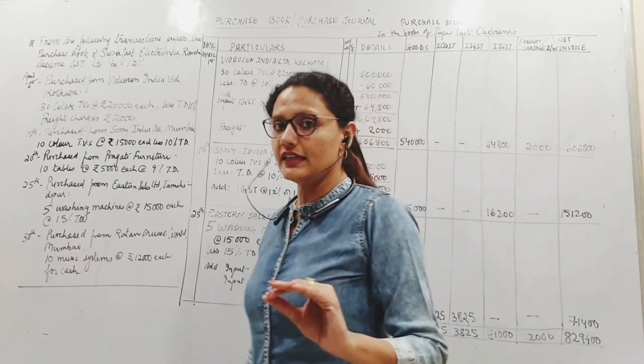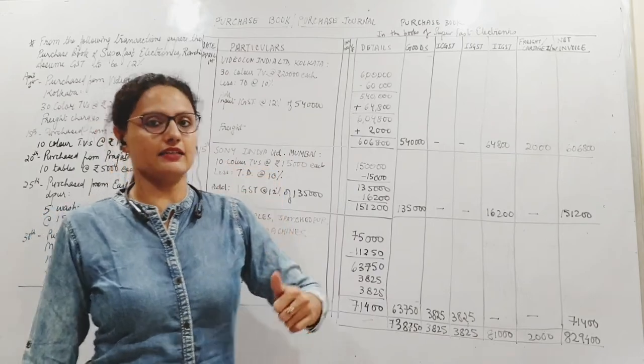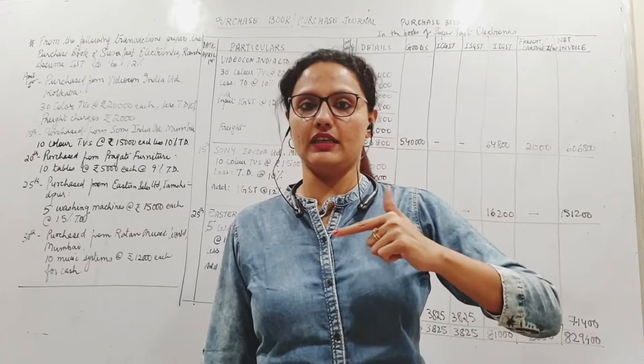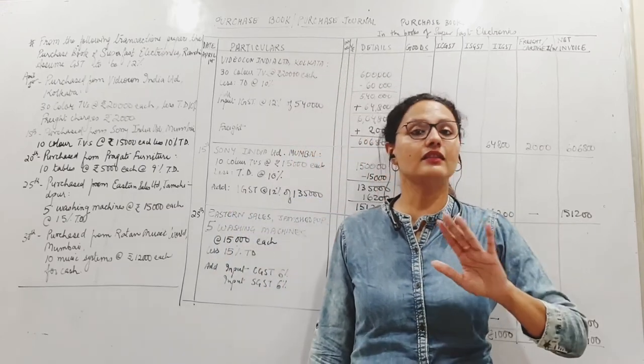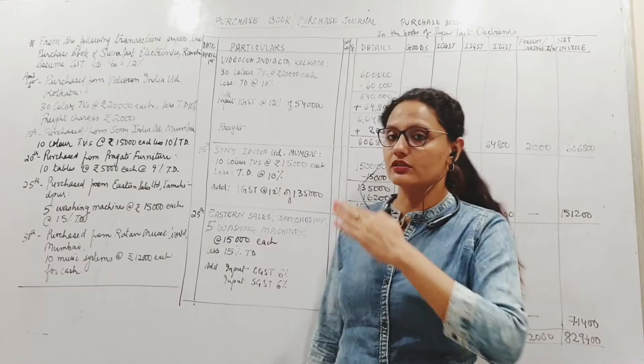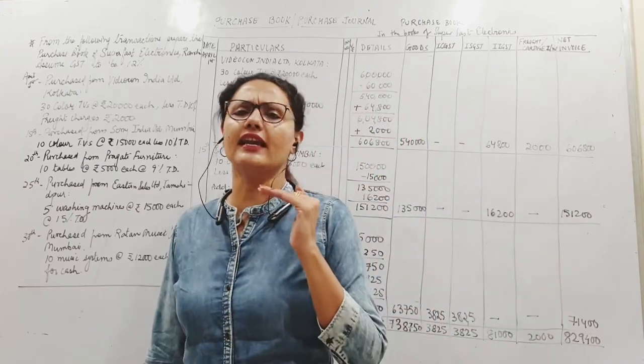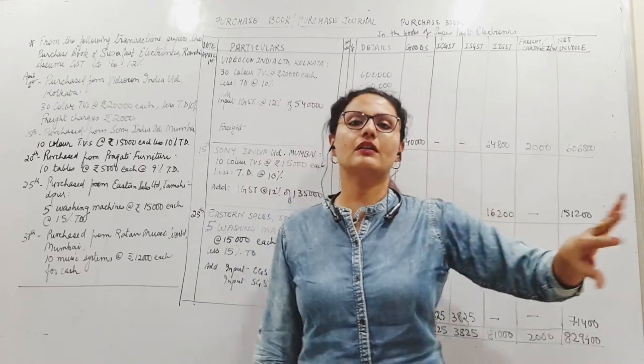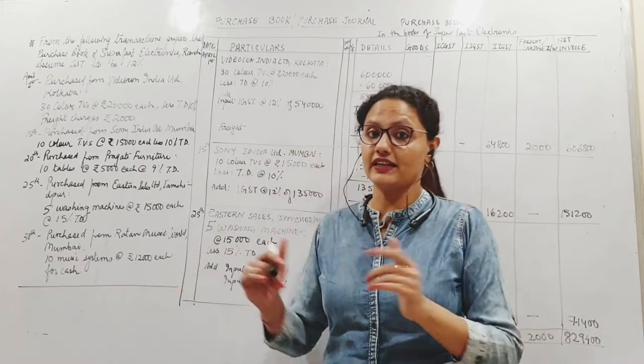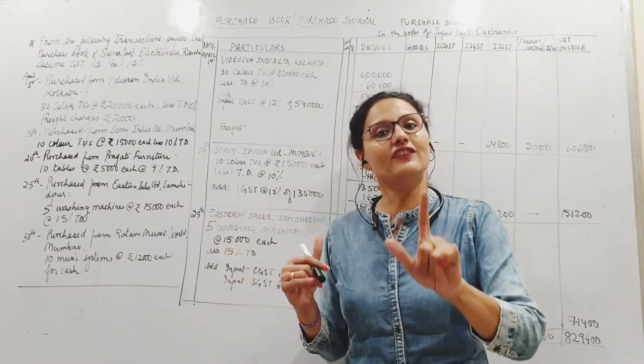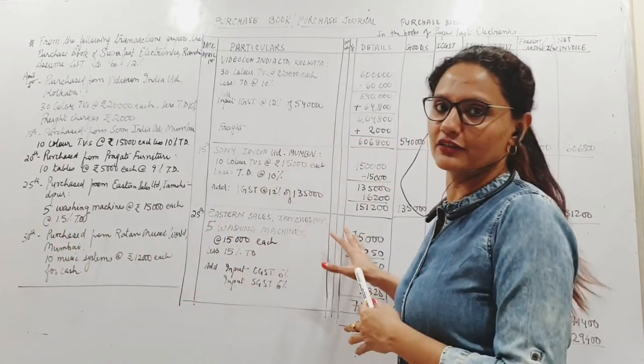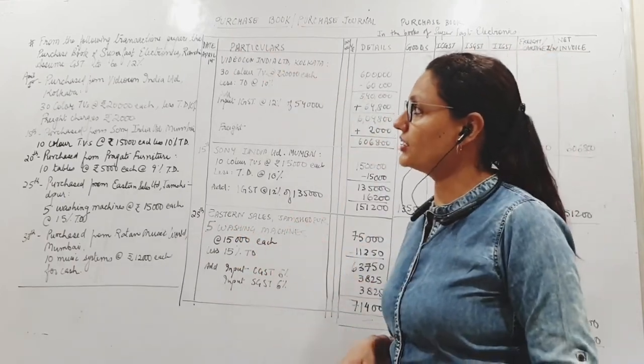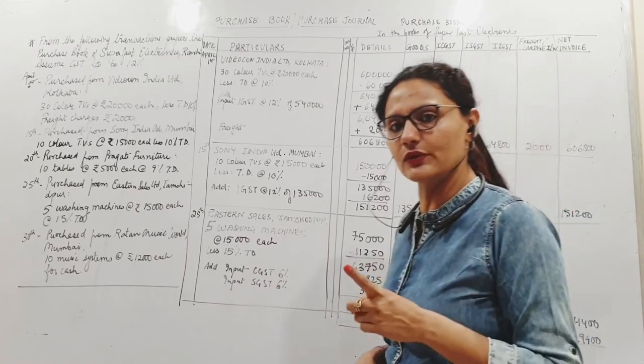We have already discussed the purchase book will record only credit purchase of goods, nothing else. When we read the transaction we have to very carefully read and pick out. Usually the sums will include transactions which should not find a place in the purchase book, so you will have to be alert on that and not just put everything that is given to you here.